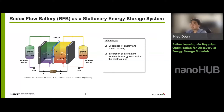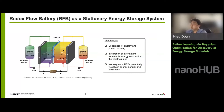Thanks to this separation of energy and power capacity, it is very easy to scale up a redox flow battery. For example, to increase the energy capacity you can simply increase the size of the storage tank without redesigning the power-converting unit. This feature makes redox flow batteries a very promising stationary energy storage system for integrating intermittent renewable energy sources such as wind or solar into the electrical grid. Our project focuses on non-aqueous redox flow batteries using organic redox active materials, which potentially yield higher energy density at lower cost.